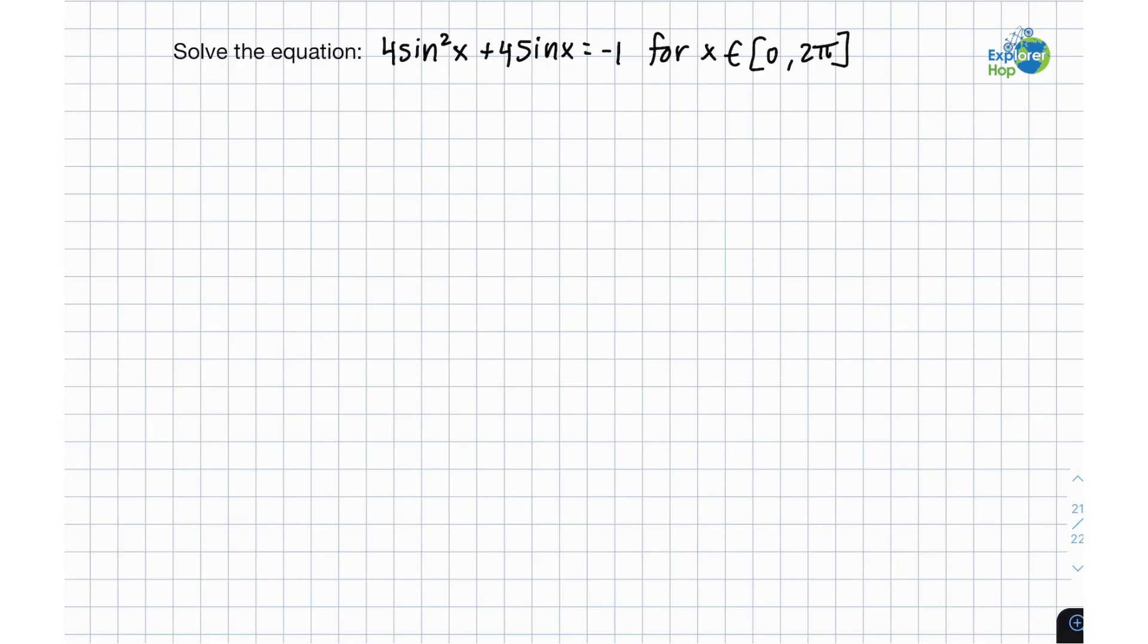Which is essentially the period of the sine function. So first we're going to rewrite this equation as 4 sine squared x plus 4 sine x plus 1 equals 0.